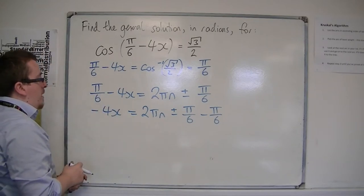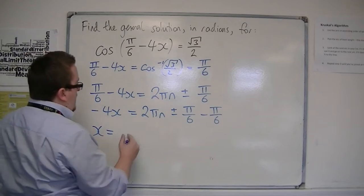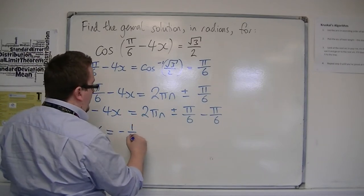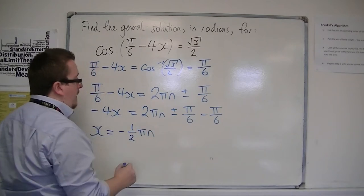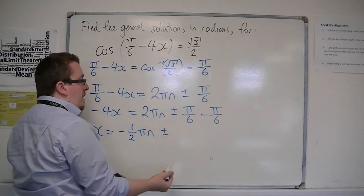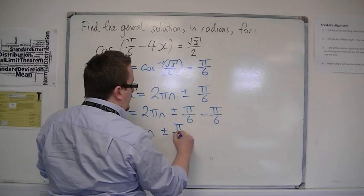Then I can divide through by minus 4. So when I do that, I get minus 2 over 4, so half, minus a half pi n. Now when I divide through by minus 4, the plus minus will still be there regardless. So minus 4, I'm going to get pi over 24.